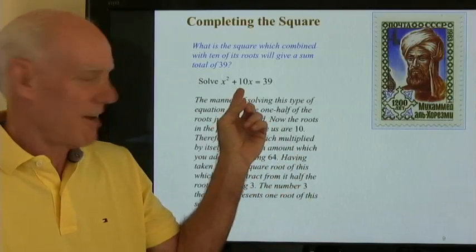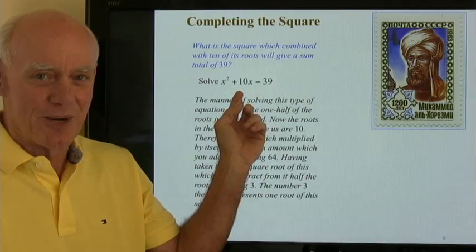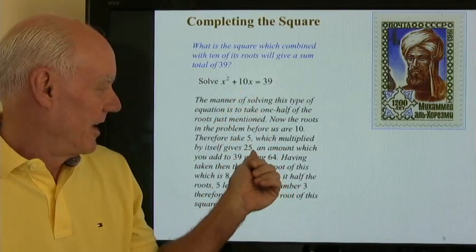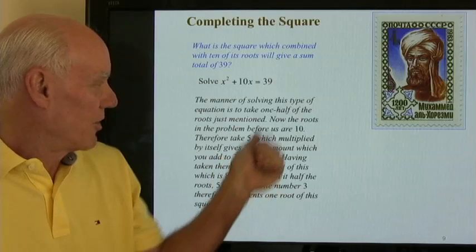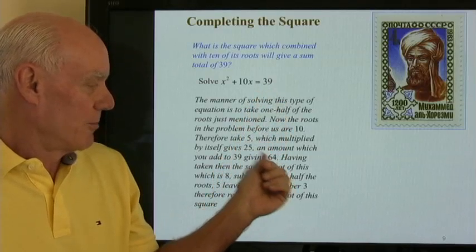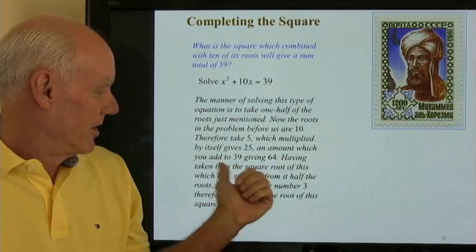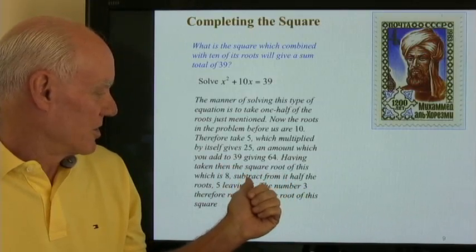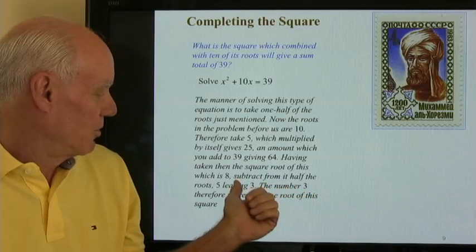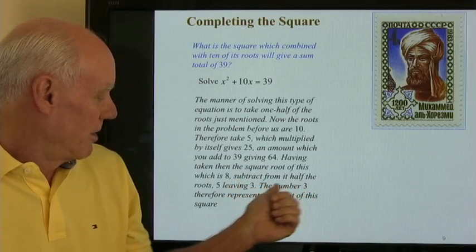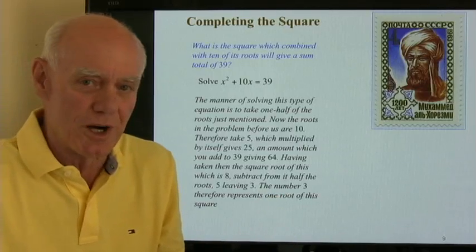Okay, so al-Kharizmi takes half the coefficient of the linear term right here, squares it, and an amount which we add to 39 giving us a sum total of 64. Having then taken the square root of this, which is 8, subtract from it half the roots, 5 leaving 3. The number 3 therefore represents one of the roots of this square.